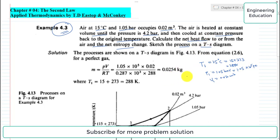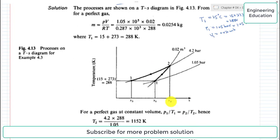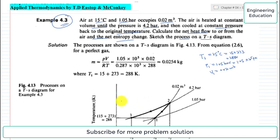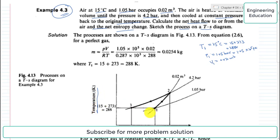The air is heated at constant volume, then cooled at constant pressure back to the original temperature. Looking at the TS diagram — with temperature in Kelvin on one axis and specific entropy on the other — from state 1 to state 2 it is heating at constant volume, so V1 equals V2 equals 0.02 cubic meters.